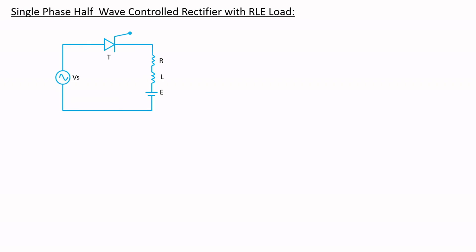This is the circuit diagram. You need to ask yourself why we need to study this circuit, and especially why we need an RLE load. This is required for two reasons. If you're using a DC motor as a load, it will have some internal resistance, some inductance, and also a back EMF. As a result, if you're connecting this circuit with a DC motor it will have an internal circuitry like this. Secondly, you can also consider a battery where you have an EMF and an internal resistance. So we need to consider these types of loads for practical analysis as well.